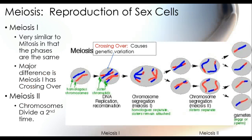Our next process is meiosis, which is the reproduction of sex cells. In meiosis we have two different stages: meiosis 1 and meiosis 2. Meiosis 1 is very similar to mitosis in that the phases are the same — we still go through interphase, prophase, metaphase, anaphase, and telophase. But the major difference is we have crossing over.